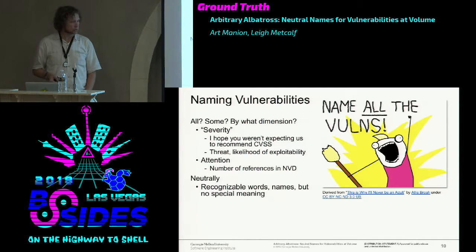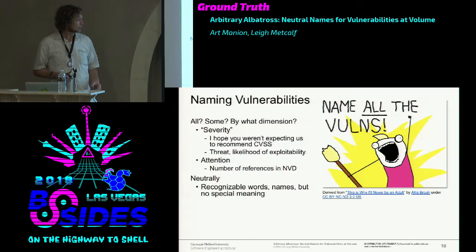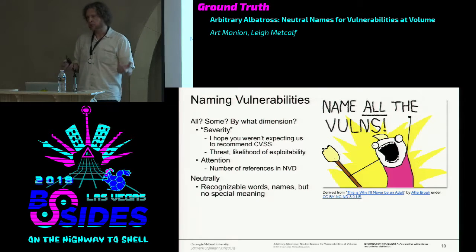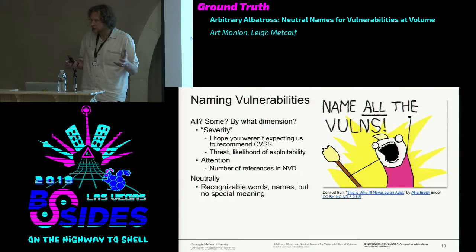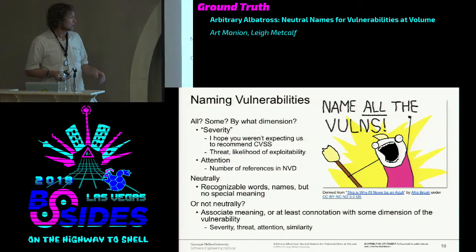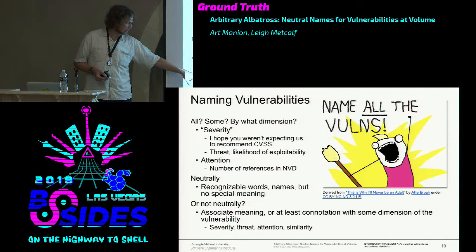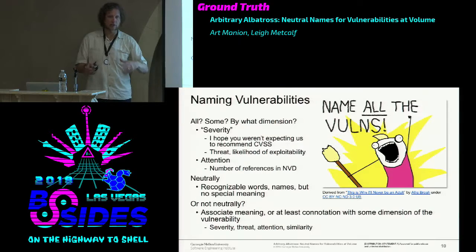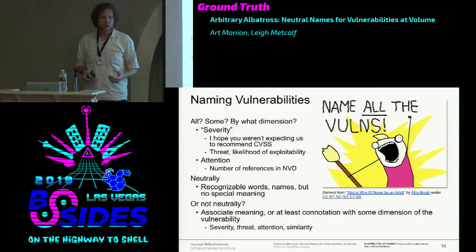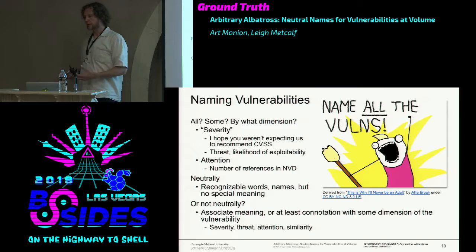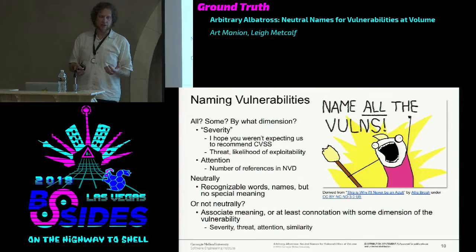We talk about naming things neutrally just to have a code word—like the three words covering the planet. Names you recognize but that don't have any extra special meaning; 'arbitrary albatross' is kind of in that department. Or we might want to be non-neutral and actually apply some meaning based on severity, threat, or attention. So if it's 'angry bear,' 'angry lion,' or 'angry tiger,' the fact that it's 'angry' signals a high CVSS score, something like that.